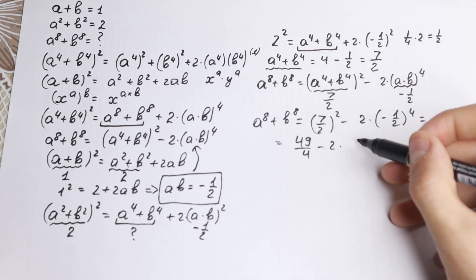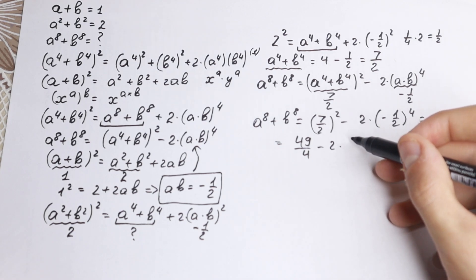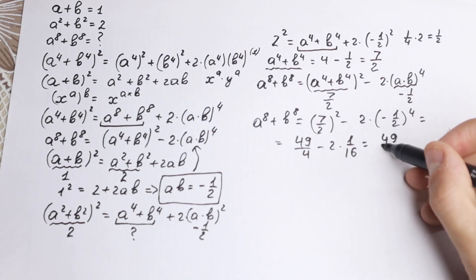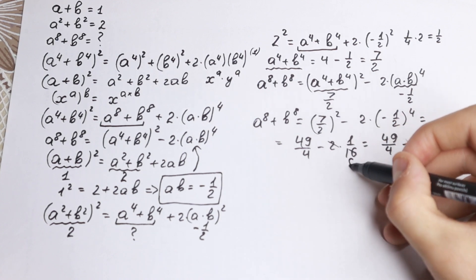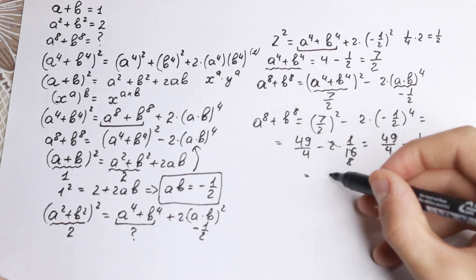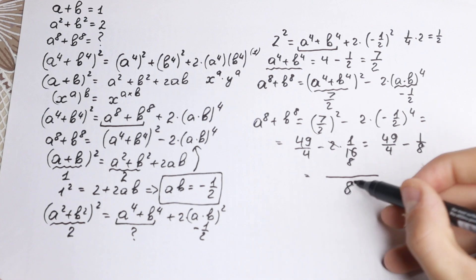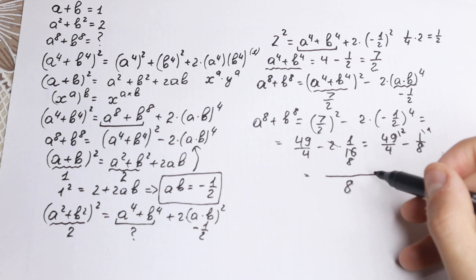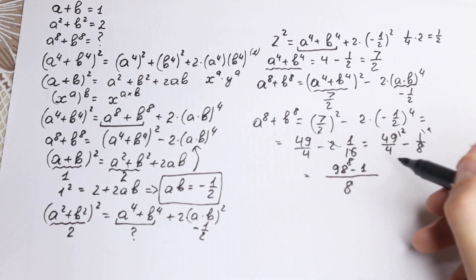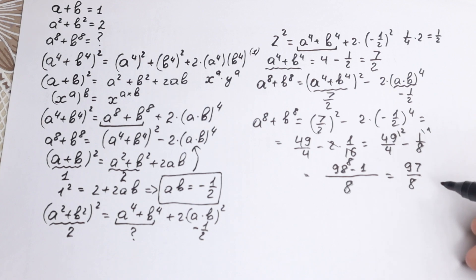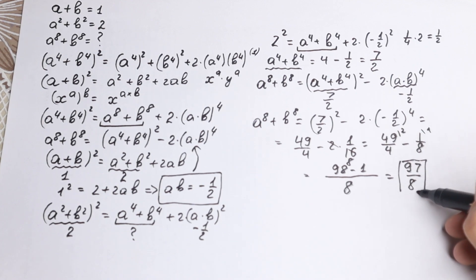Continuing: 2 times 1/16 simplifies to 1/8. So we have 49/4 minus 1/8. Finding the common denominator of 8: that becomes 98/8 minus 1/8, which equals 97 over 8. So a to the eighth plus b to the eighth equals 97/8.